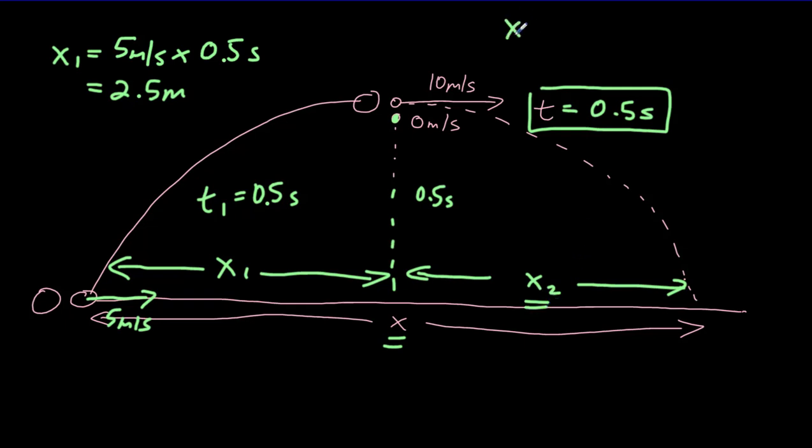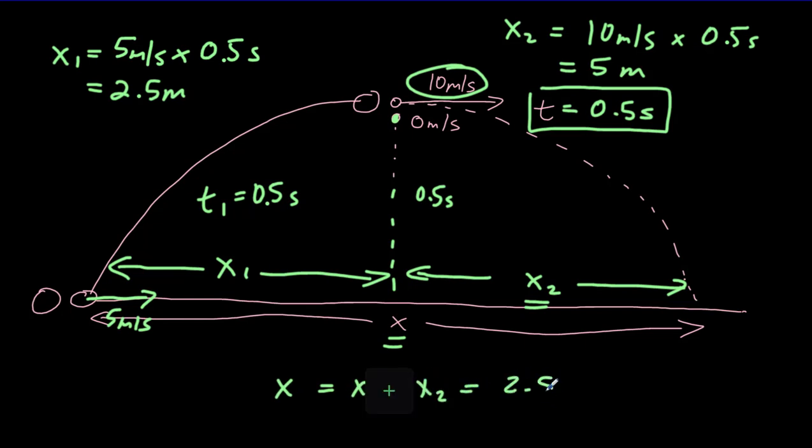For x2 here, it's moving at a constant speed of 10 meters per second across, and it moves across for 0.5 seconds. So it's going to move across by 5 meters, and that means x, which is just the sum of x1 and x2, has got to equal 2.5 plus 5 equals 7.5 meters. So x is equal to 7.5 meters, and t is equal to 0.5 seconds.